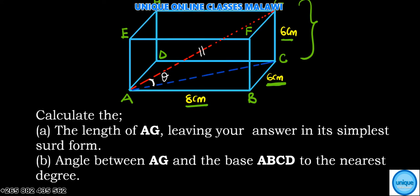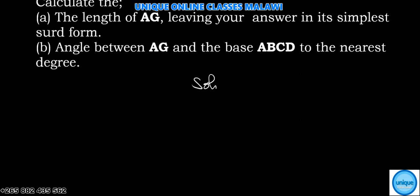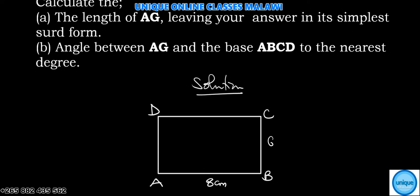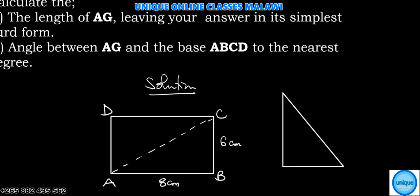Let me draw this. Our base is ABCD, where AB is 8 centimeters and BC is 6 centimeters. We need to find this line, so we're going to apply Pythagorean theorem. We have that triangle where A is here, B there, and C. AB is 8 centimeters and BC is 6 centimeters.